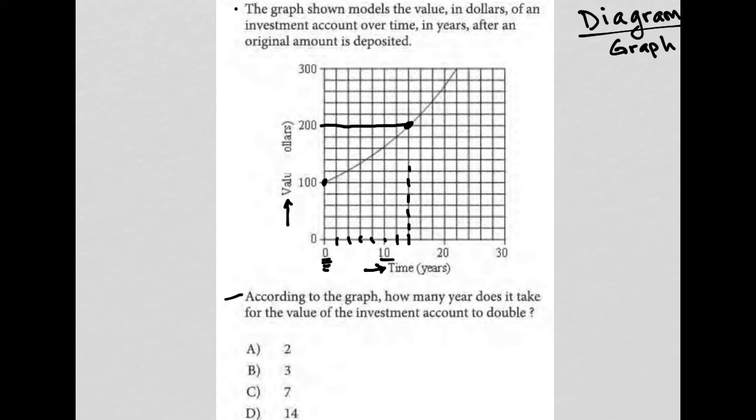So 14 years corresponds with the x value of this point on the graph that gets us to $200 for the y value. So answer choice D must be the correct answer, 14 years.